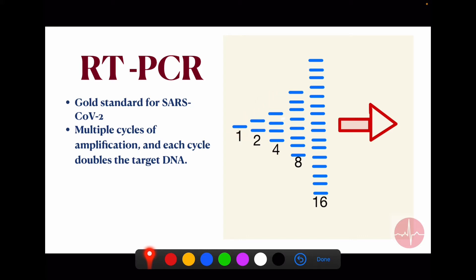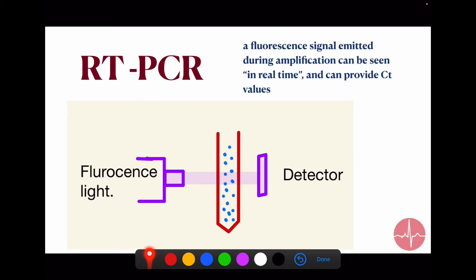Suppose this is the DNA. We double in each cycle up to the detectable level. And how is it detected? It detects via fluorescent light.